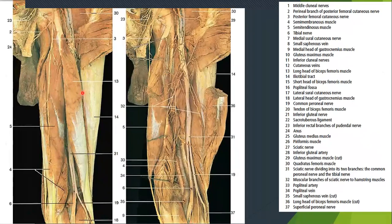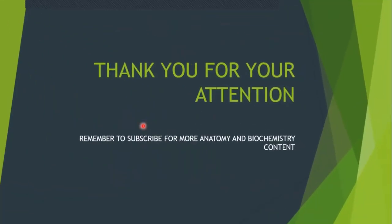Here is the nerve dividing into the common peroneal and tibial branches. You can see branches leaving — this is the sural nerve and the sural communicating branch. You can see it lies deep to the long head of biceps femoris, whereas the posterior femoral cutaneous nerve is superficial to the hamstrings. You can pause the video and look at each structure. Thank you for your attention — remember to subscribe for more anatomy and biochemistry content.